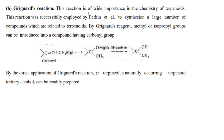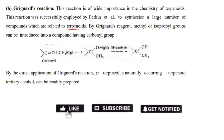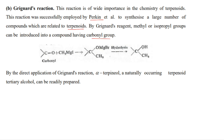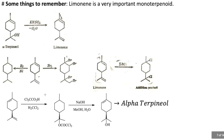Another important method is the Grignard reaction, which was successfully employed to synthesize a large number of terpenoid-related compounds. By Grignard reagent, methyl or isopropyl groups can be introduced into compounds having a carbonyl group. On hydrolysis, this gives a compound having both a hydroxyl group and a methyl group. By direct application of the Grignard reaction, alpha-terpenol, a naturally occurring tertiary terpenoid alcohol, can be readily prepared.